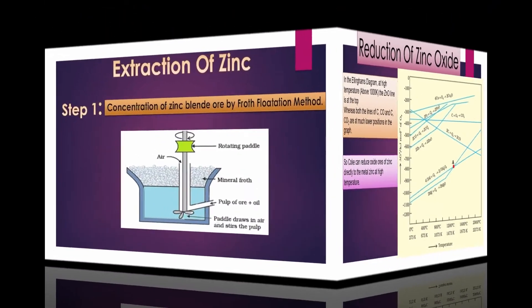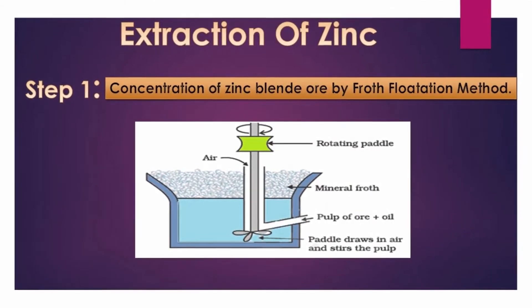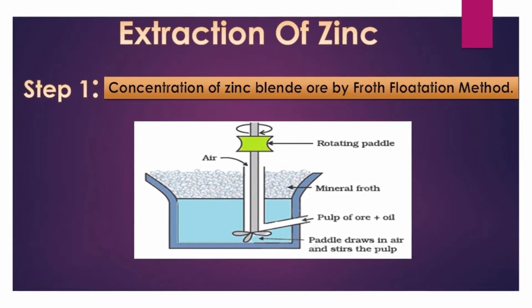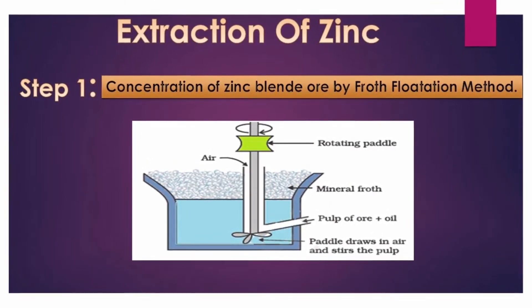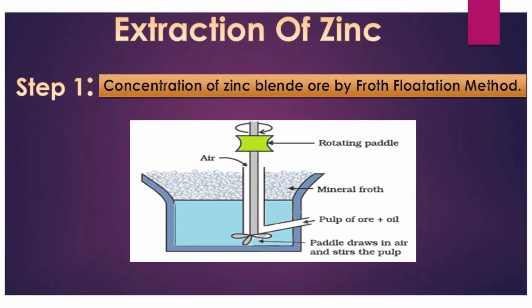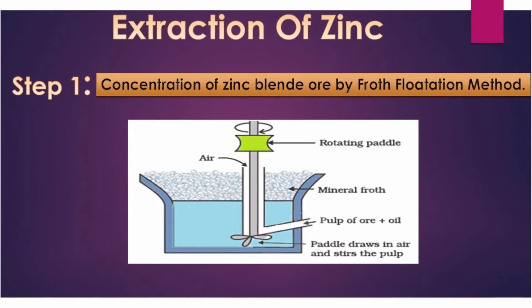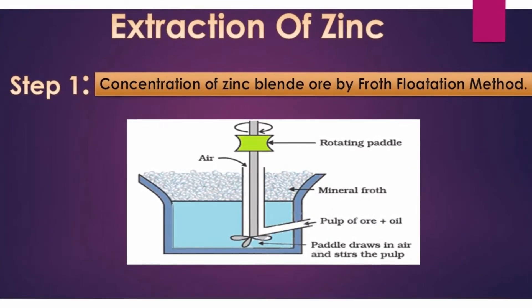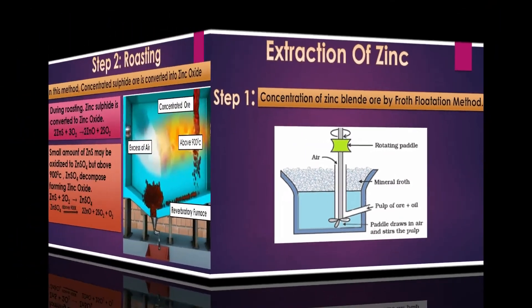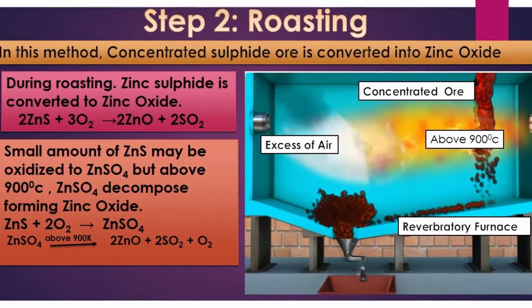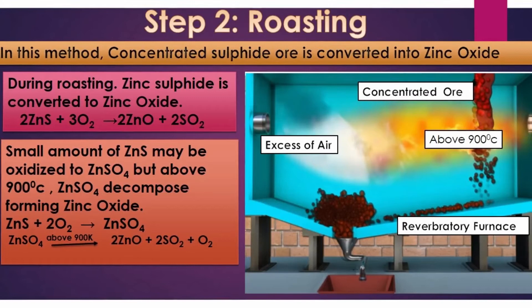Zinc is extracted from zinc blende. The chemical formula of zinc blende is ZnS. Since it is a sulphide ore, it is concentrated using the froth flotation process. The second step involved in the extraction of zinc is roasting.